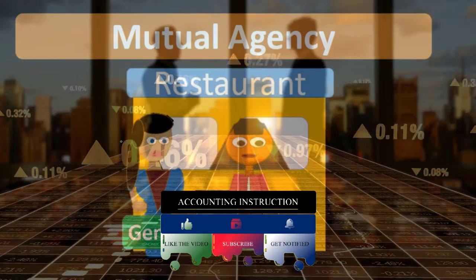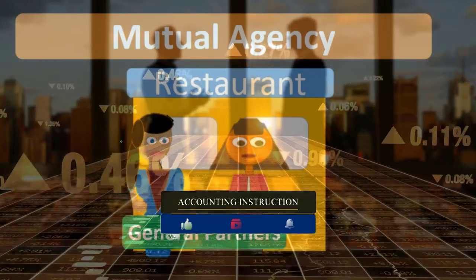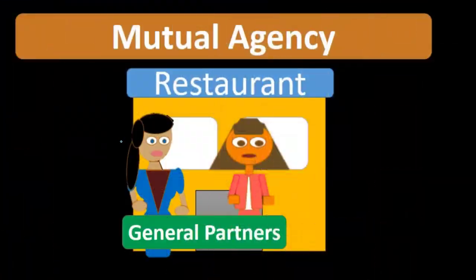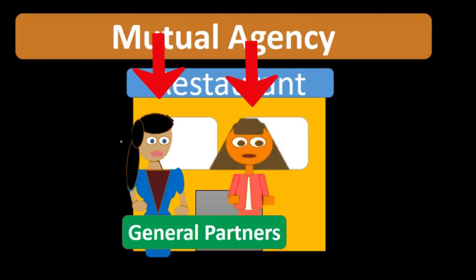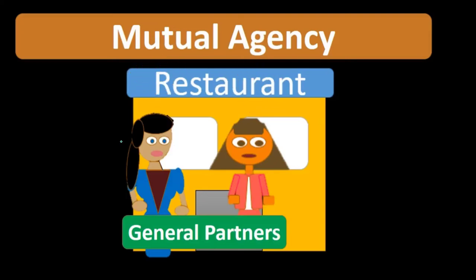Therefore, mutual agency is something to be very aware of when in a partnership, because either partner can act in the interest of and make decisions on behalf of the partnership as a whole, which could put other partners into obligations related to their interest within that partnership.